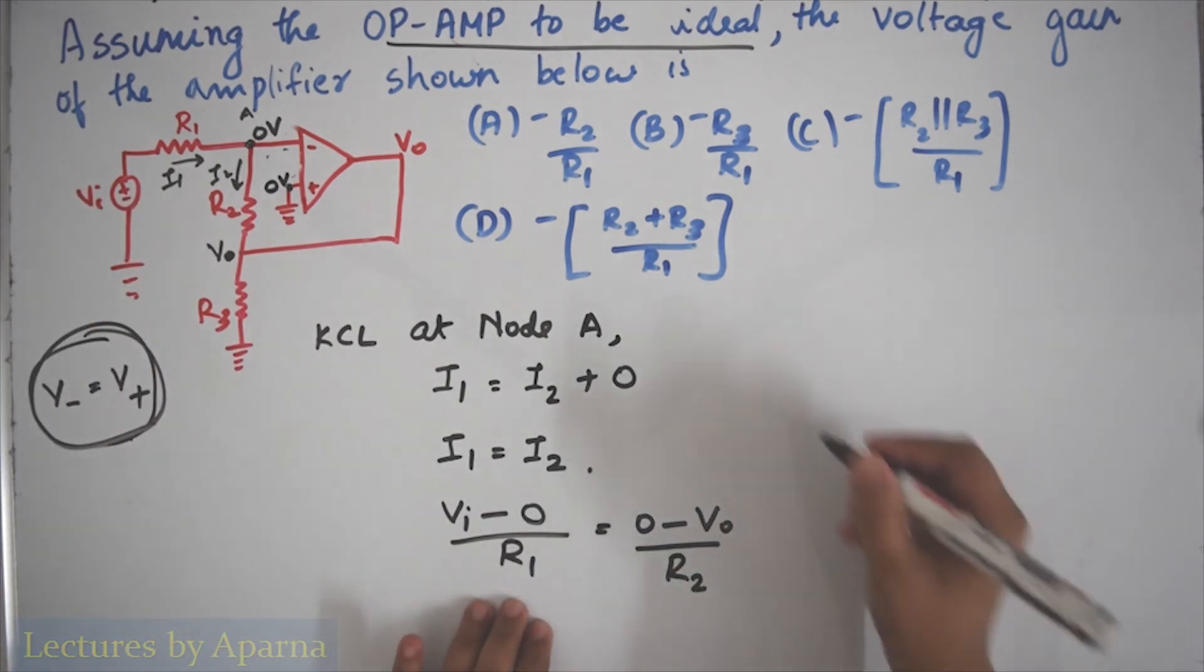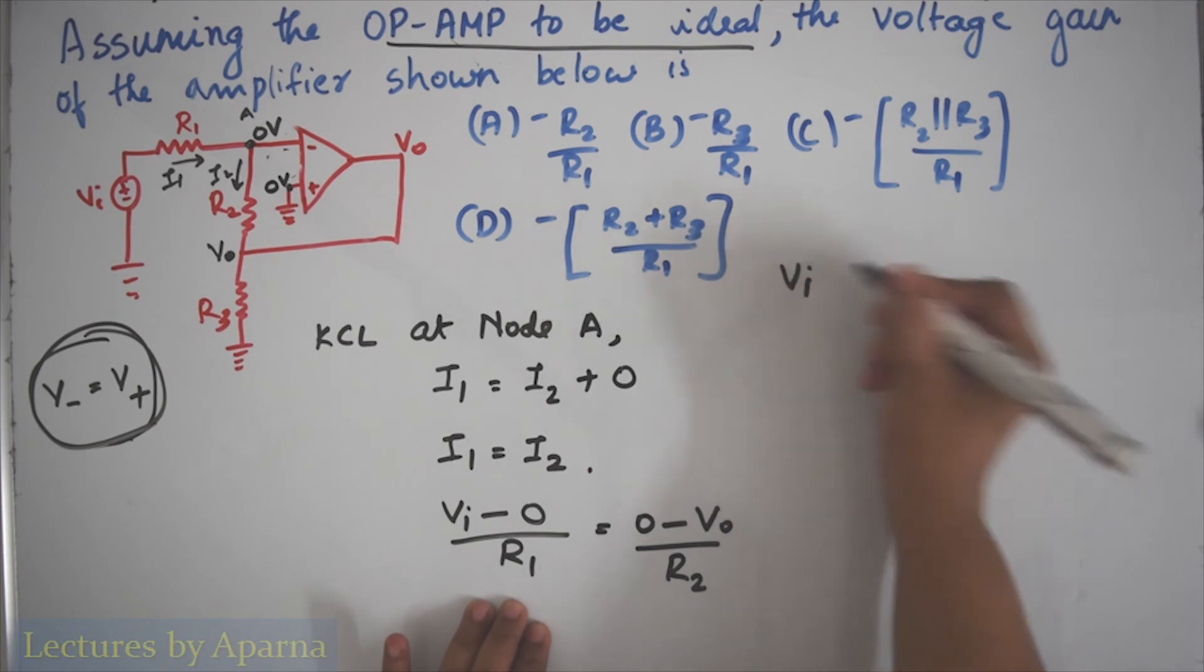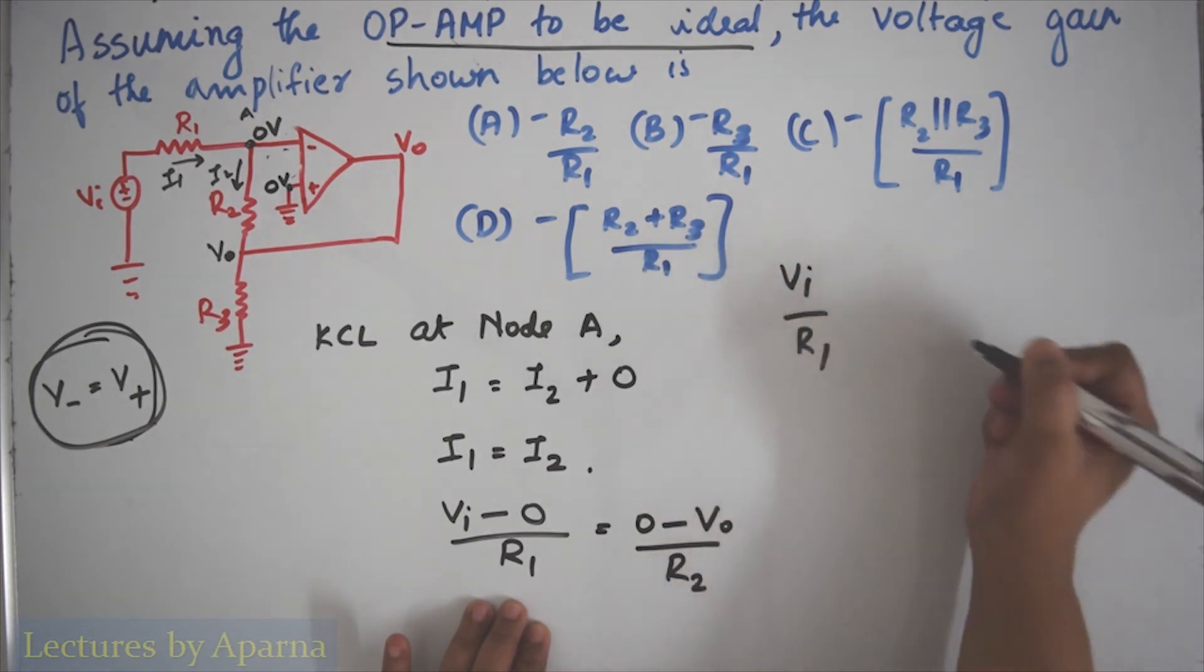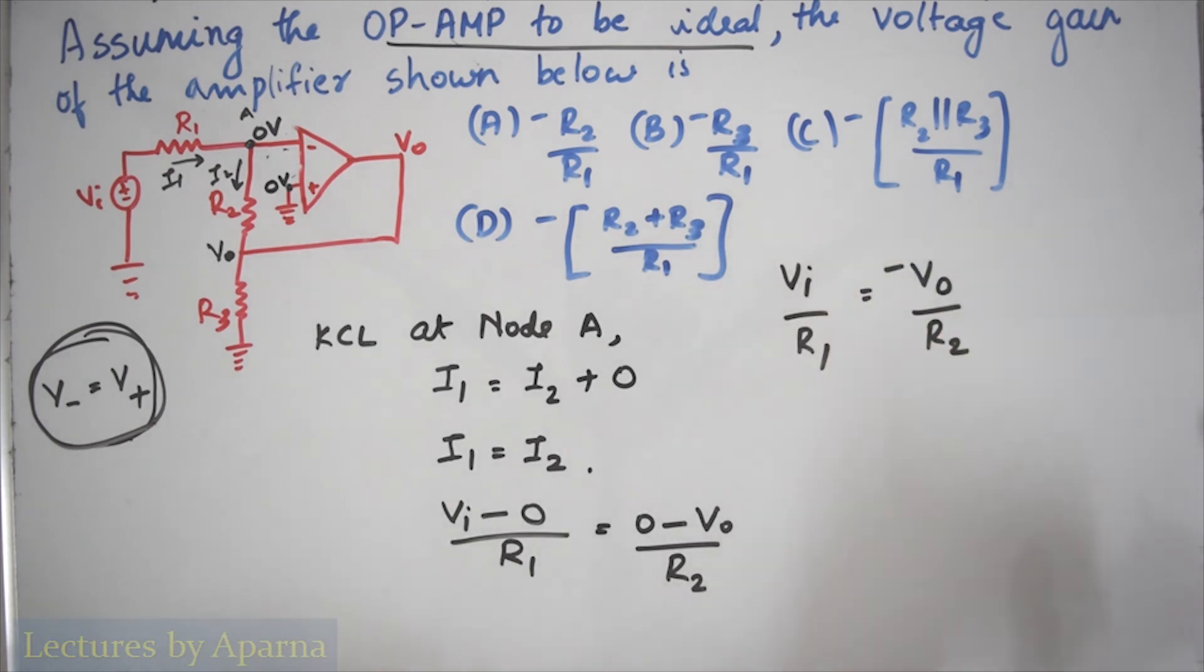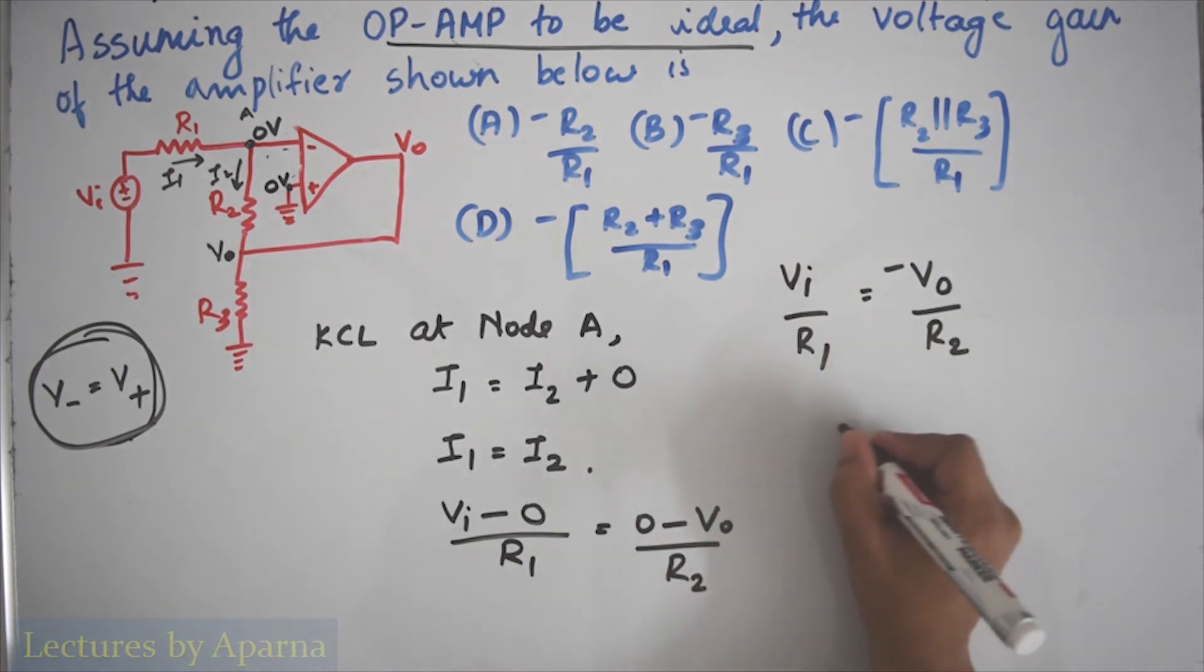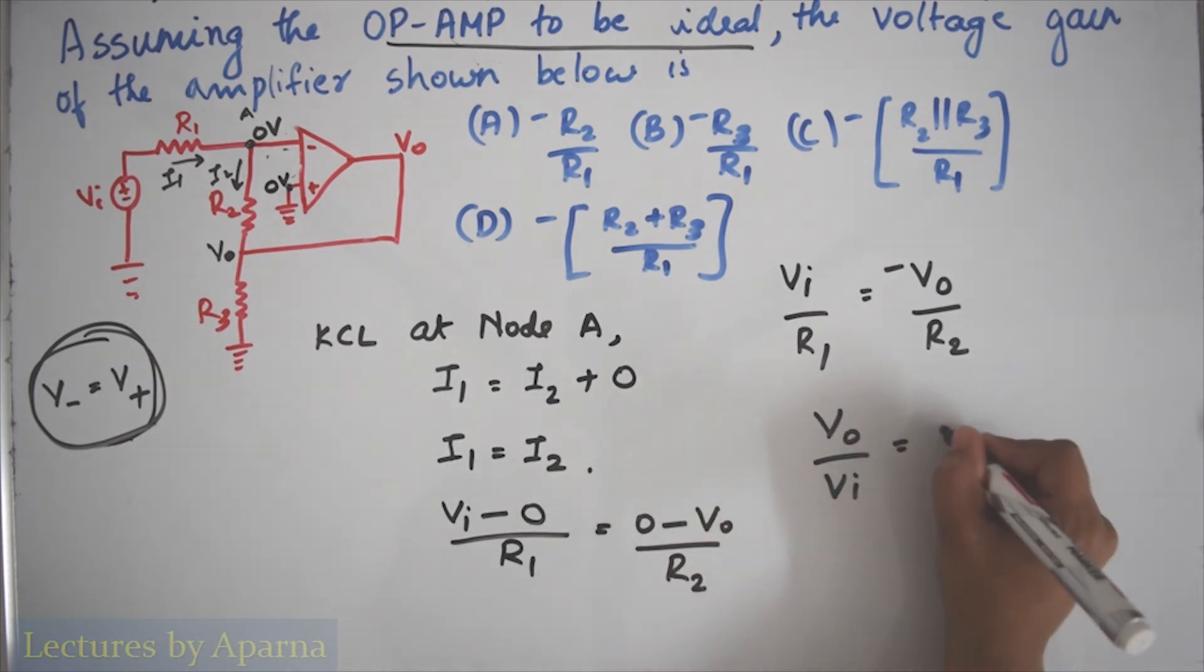From this we can write VI/R1 equal to minus V0/R2, or the voltage gain V0/VI is equal to minus R2/R1.